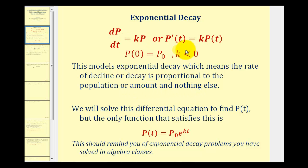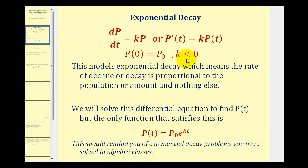Taking a closer look at this, it tells us that the change of p with respect to time is equal to some constant k times our function p. And because we have exponential decay, k is going to be negative.